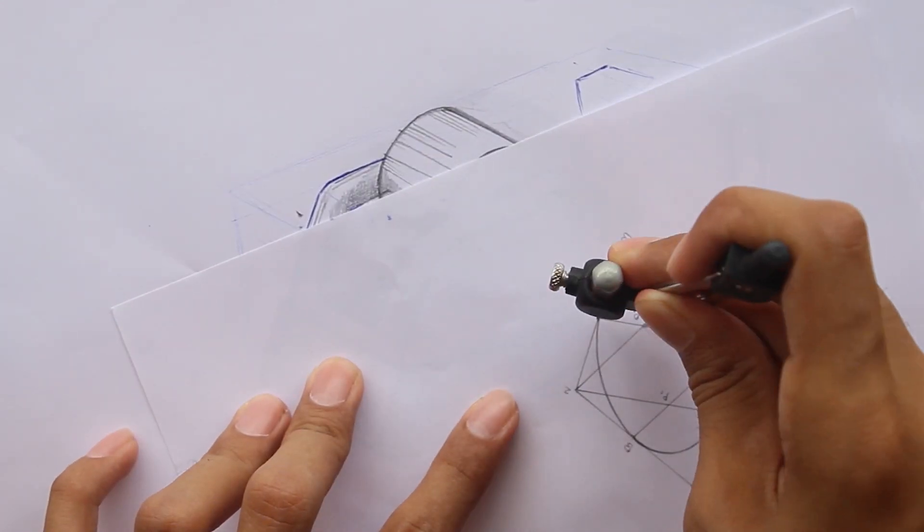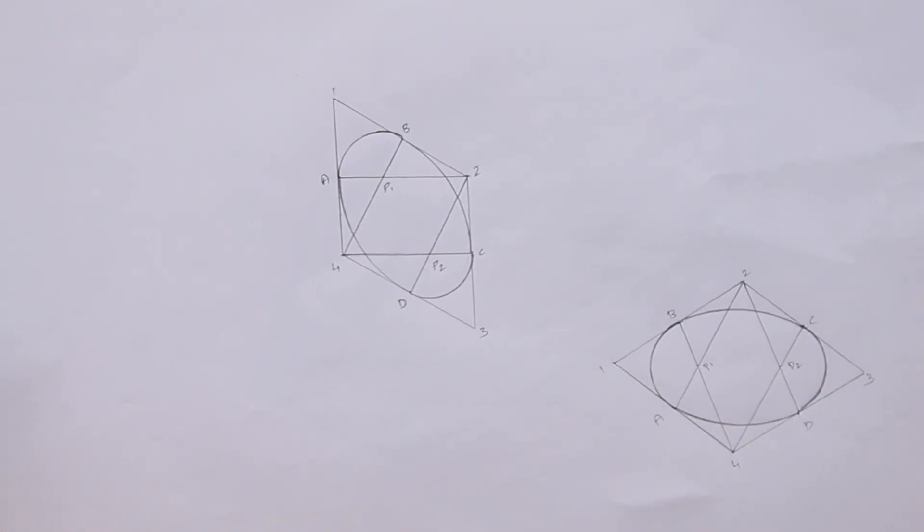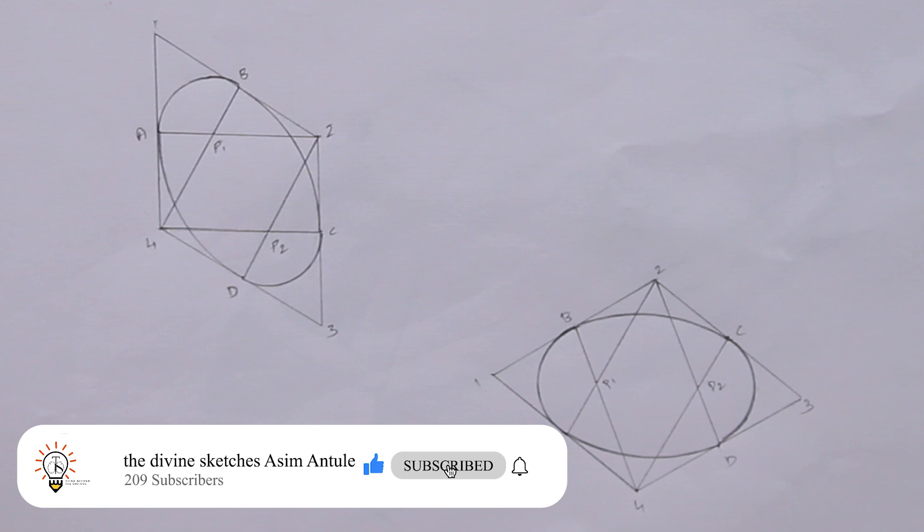This is how you can draw an ellipse using the rhombus method. I hope you enjoyed this video. Don't forget to hit the subscribe button below. Comment the topics you want me to make videos of. Keep practicing and thanks for watching.